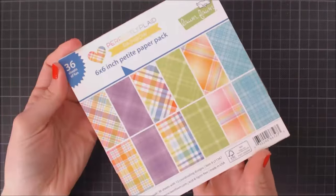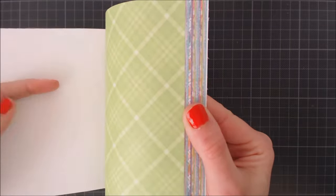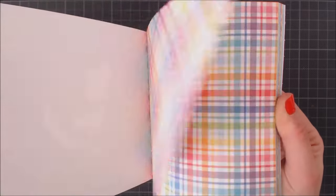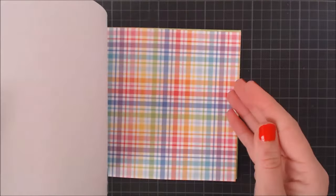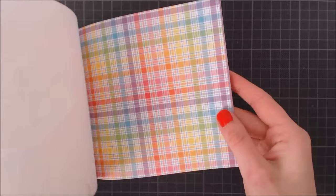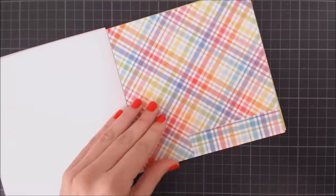While the glue dries completely, I'm going to be working on my scene and I'm going to be using the Perfect Plaid Rainbow collection to create a fun and colorful floor. I'm using the same cross stitch rectangle die.